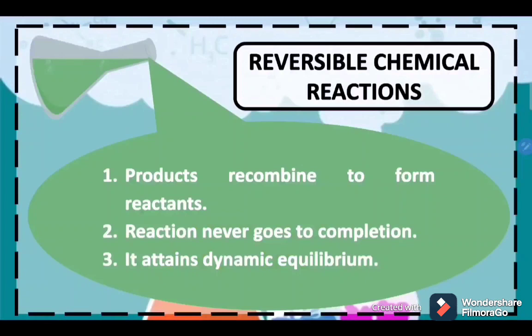Number three: it attains dynamic equilibrium. When a certain chemical reaction attains chemical equilibrium, because of the same rate of reaction that happens on both sides of the equation, we can consider it a reversible chemical reaction. It is dynamic because the processes that happen on both sides — the reactants and the product sides — is a continuous process.